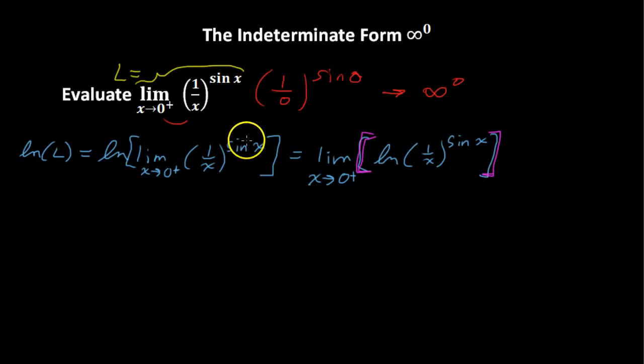By the properties of logarithms, when you have the logarithm of something raised to an exponent, you could take that exponent and move it out front and multiply it. So what we have here is sine of x multiplied by the natural log of 1 over x.